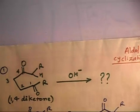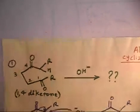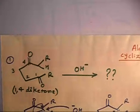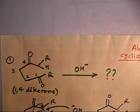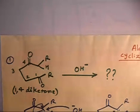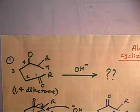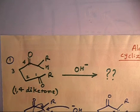Let us take the next problem. This problem is related to aldol cyclization. If you have two keto groups in the same compound, one carbanion is formed and that carbanion can attack within the same molecule. Do you remember the aldol reaction? In aldol condensation, you have two aldehydes or two ketones. From one aldehyde you make the carbanion and attack on the next aldehyde — that is the aldol reaction.